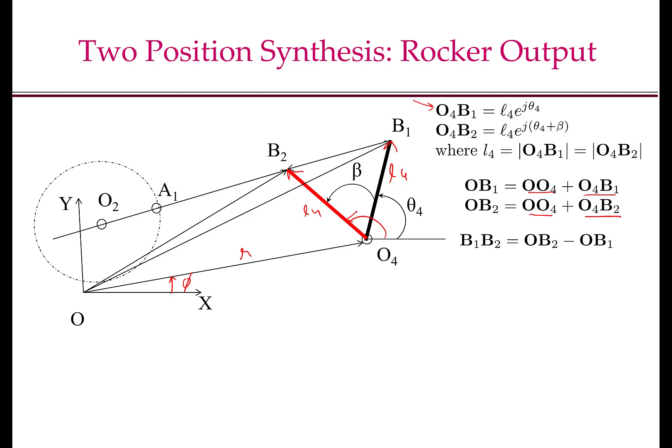Since O2 lies on the line B1B2, the position vector of OO2 or the equation of the line going through B1B2 will be OB1 plus KB1B2. We have seen this before that if we know one point on the line and the direction vector along the line, then we can get any point on the line, which is OB1 plus KB1B2. Since I know OO4 and I know O4B1, therefore OB1 is known. Similarly, OB2 is known because I know OO4 and the vector O4B2. And B1B2 is known because I know both OB2 and OB1. Therefore, I know OB1 as well as B1B2. So as soon as I choose a value of K, I will get my location of the fixed pivot O2.